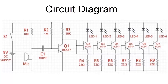The transistor works as an amplifier. It receives signals from the sound via mic, and the mic controls the circuit on the basis of an RC amplifier.